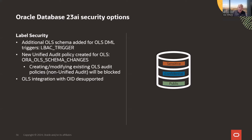For Label Security, we're creating a separate label security schema to hold labels and triggers, which will be part of a future feature. We're also migrating from traditional audit to unified audit, so we have unified audit policies for OLS. One desupport note: OLS integration with OID is desupported due to feature changes in OID as well.